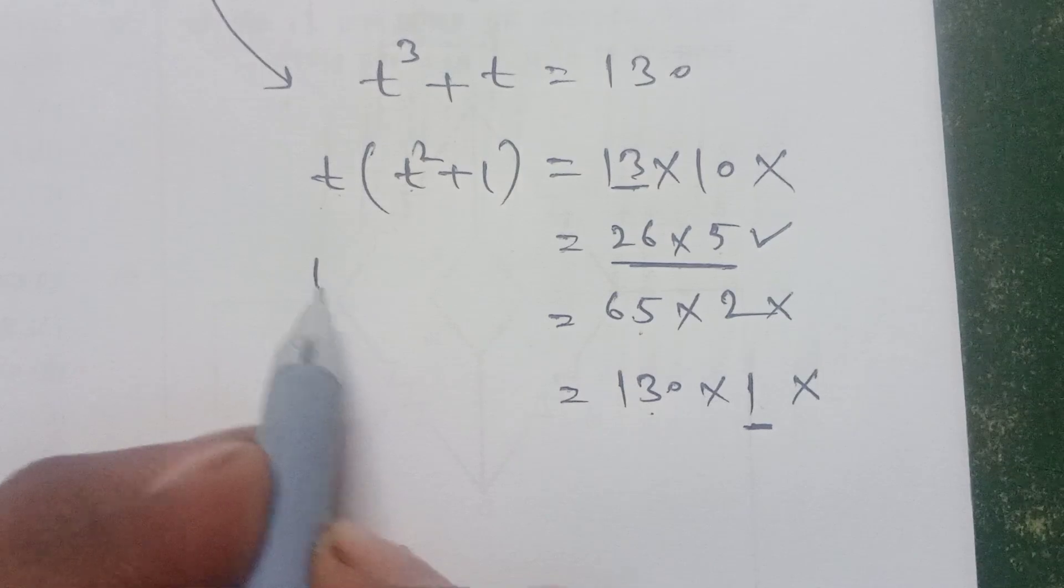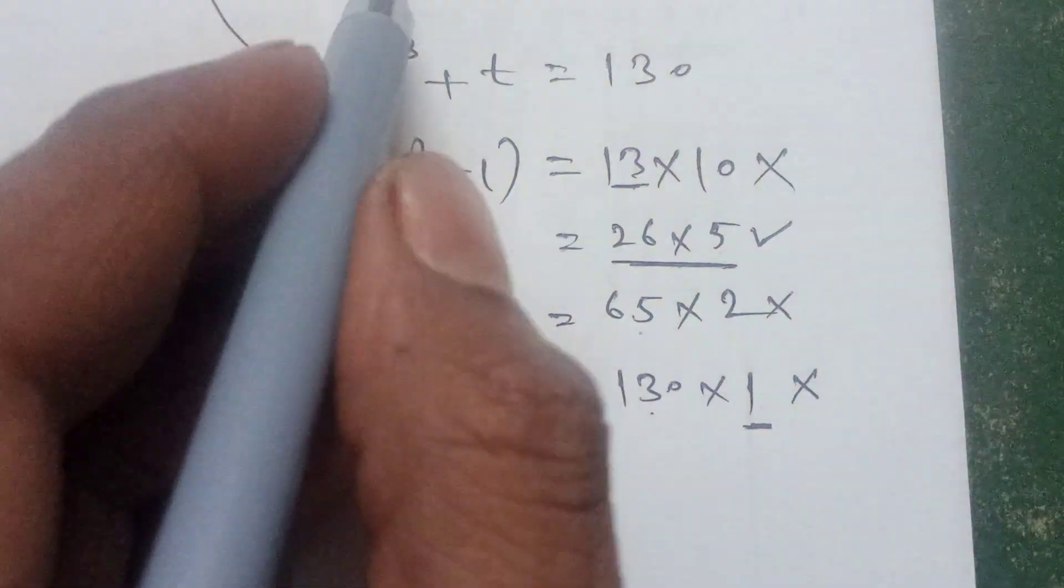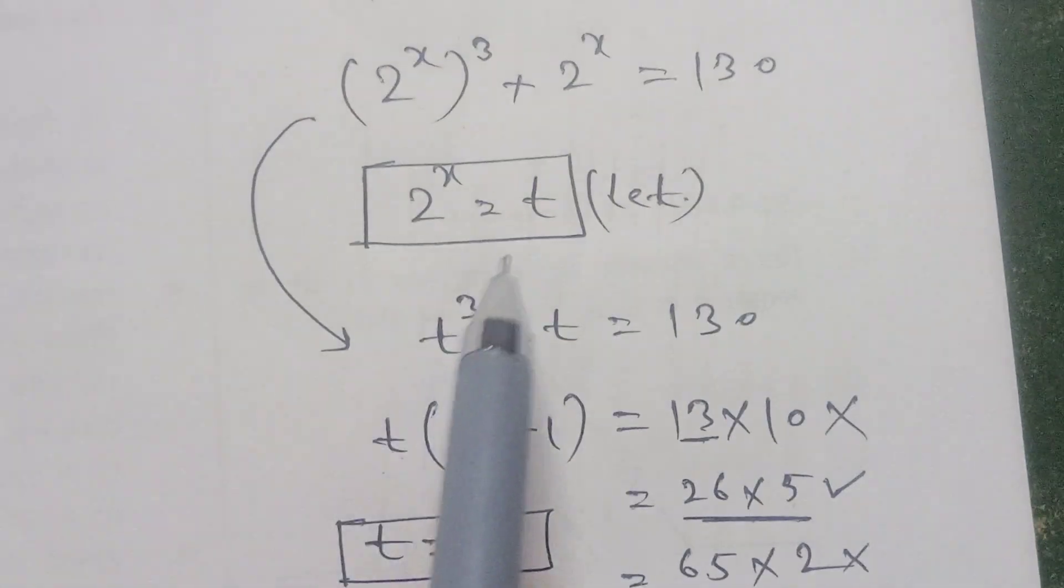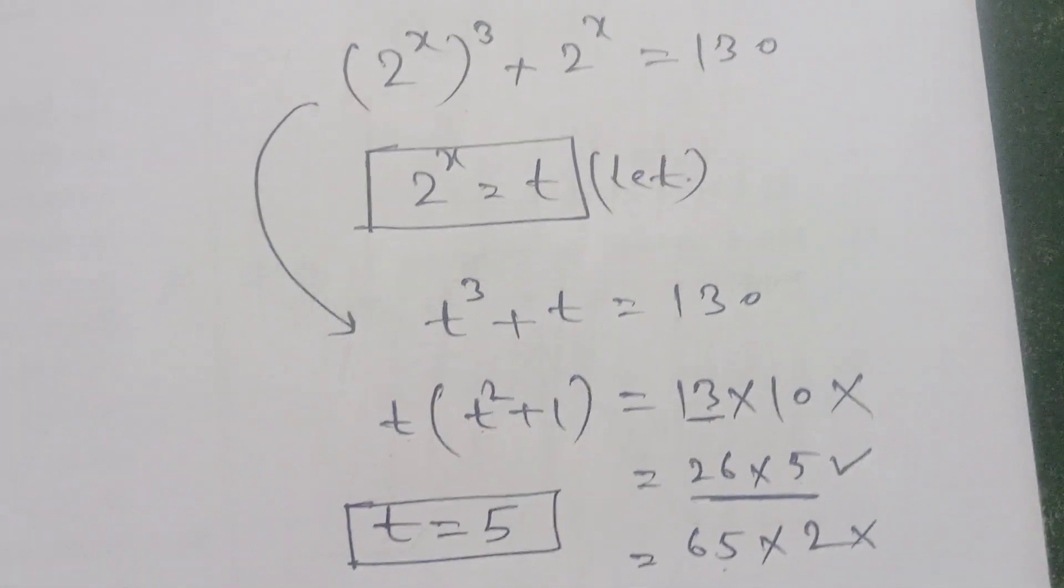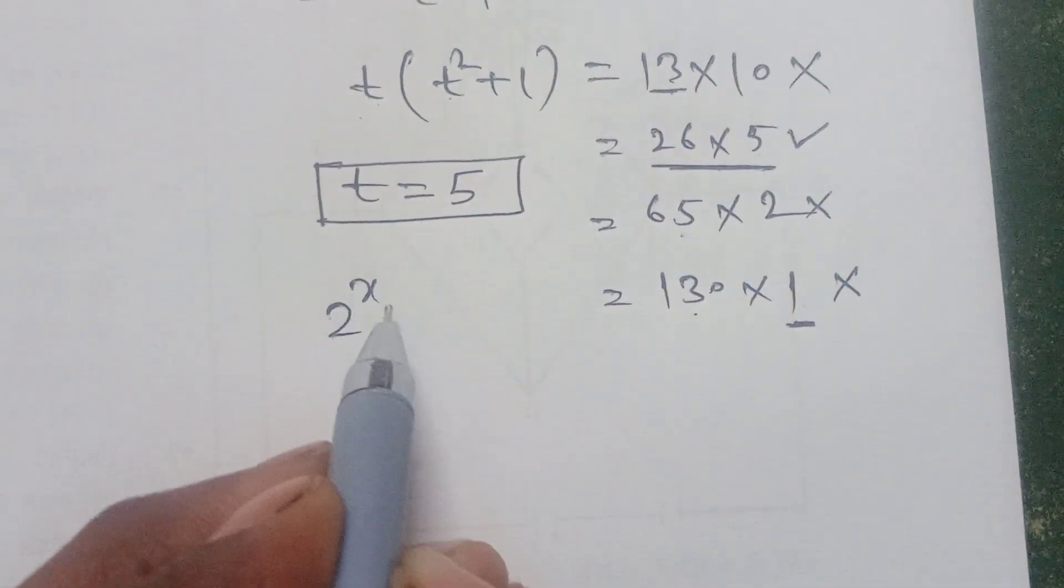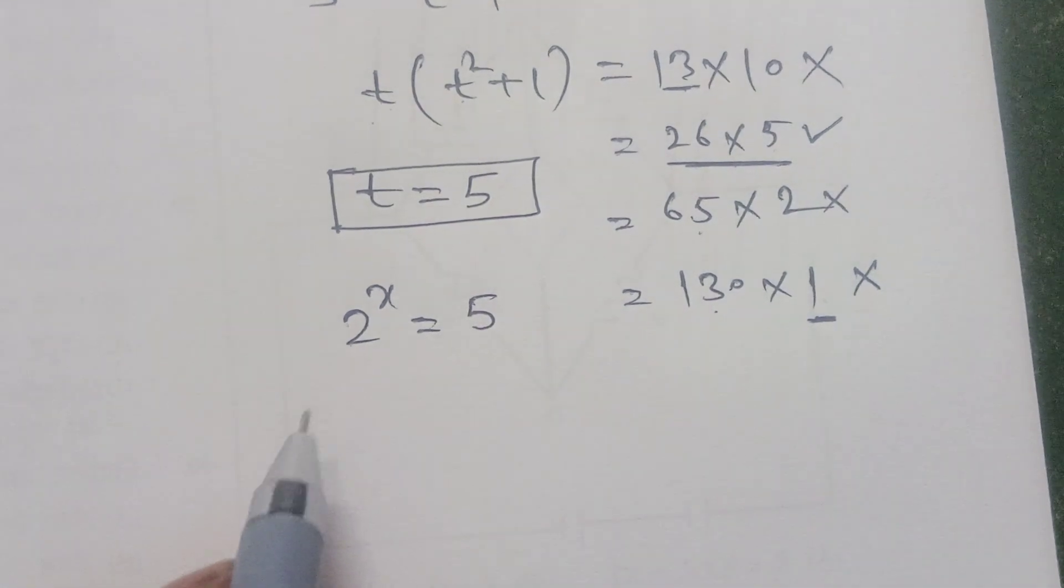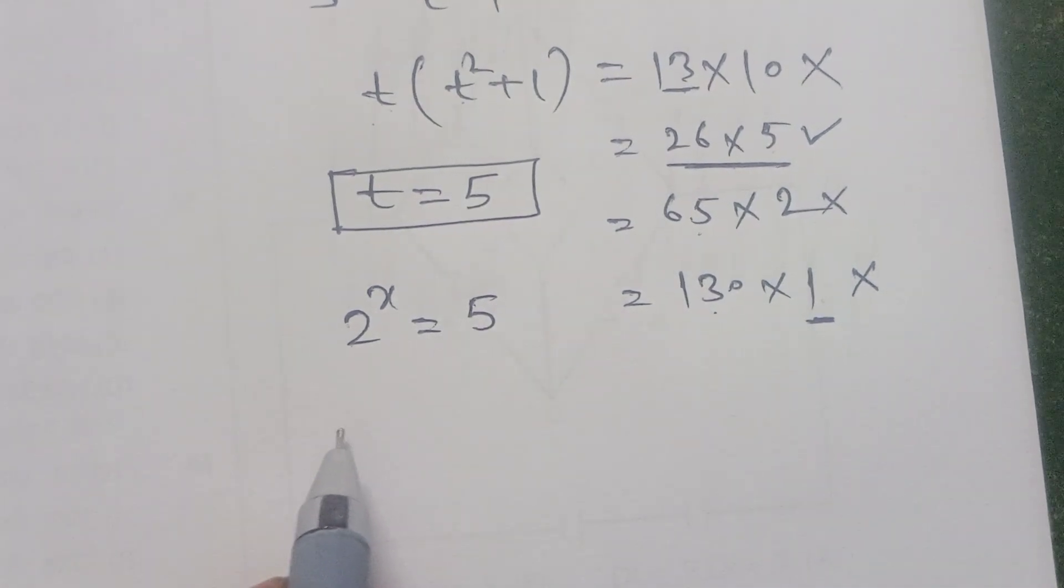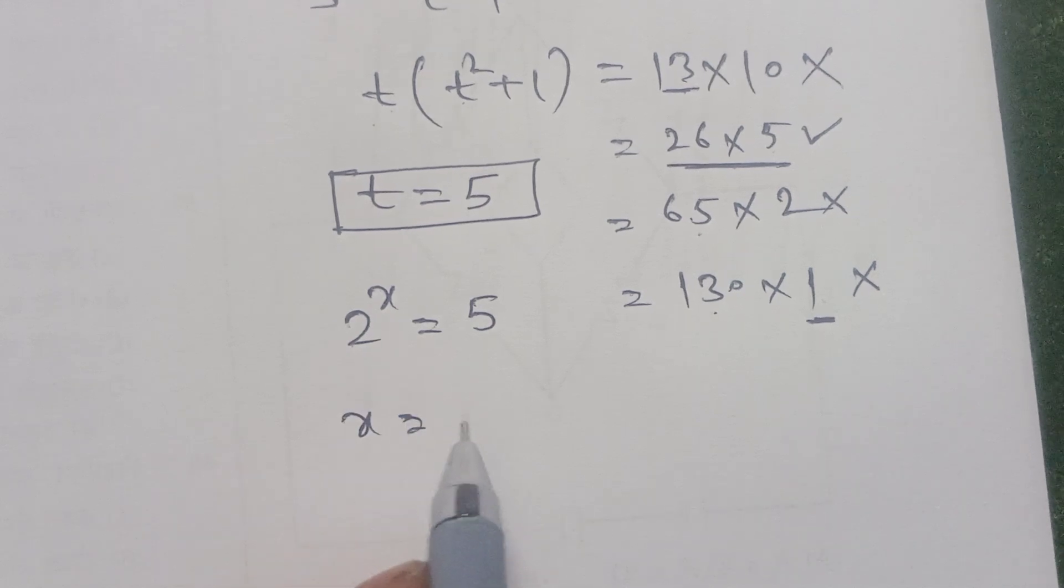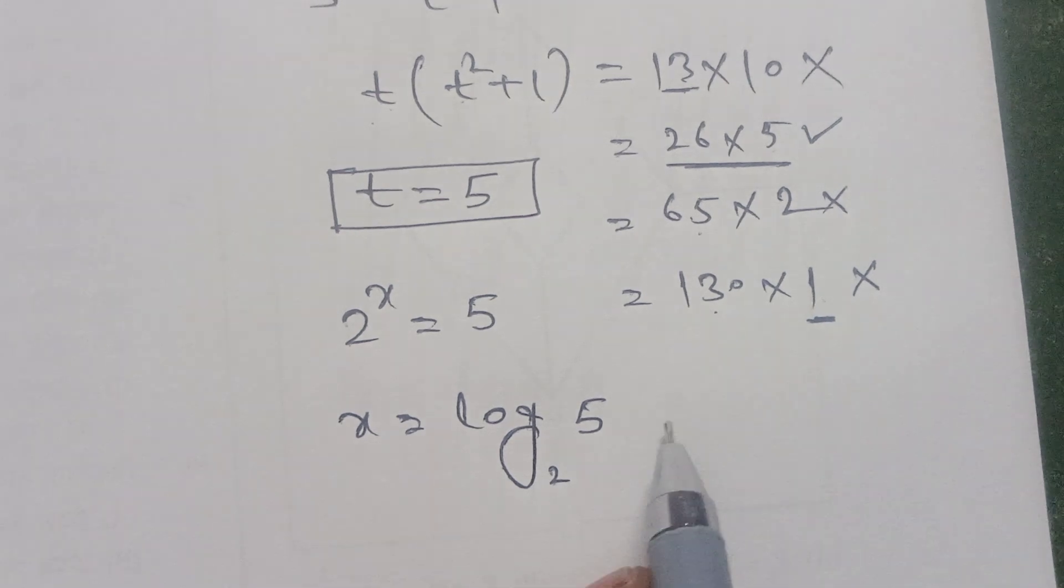So we can see t is equal to 5. So what we let, t is equal to 2 to the power x, so we can write 2 to the power x is equal to 5. Also it can be written x is equal to log base 2 of 5. Answer.